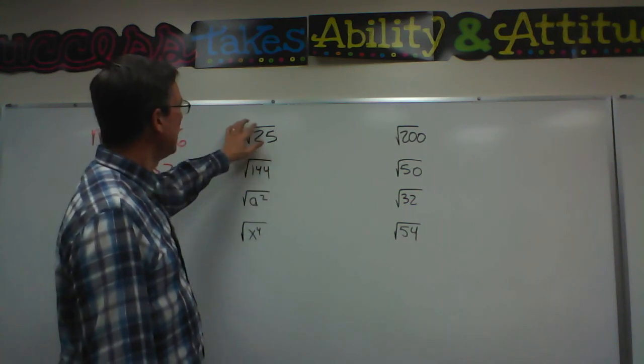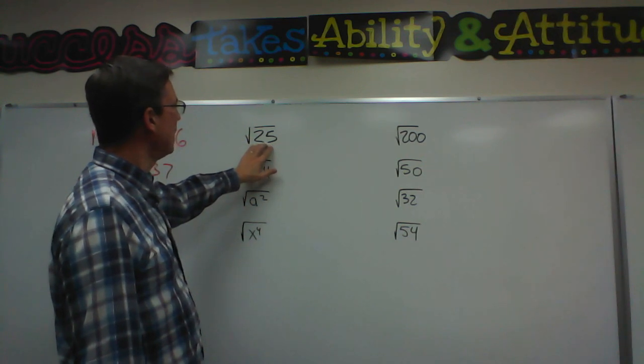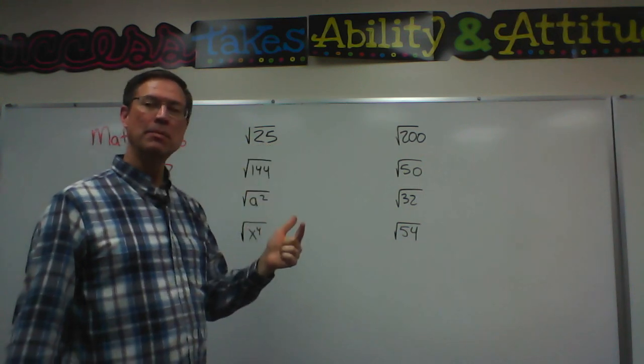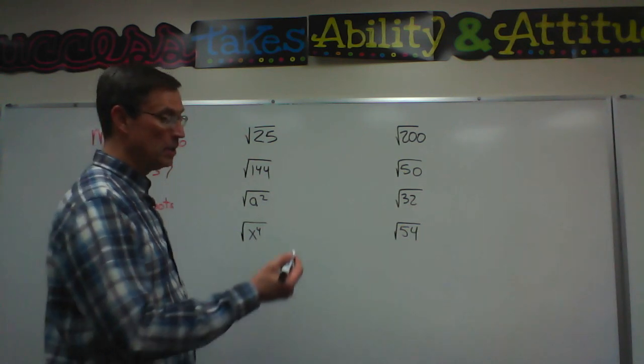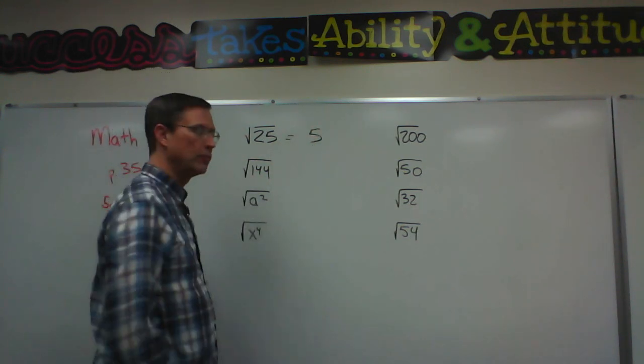So this radical over the radicand of 25 means what number times itself equals 25, and hopefully you know the answer to that. That is 5.